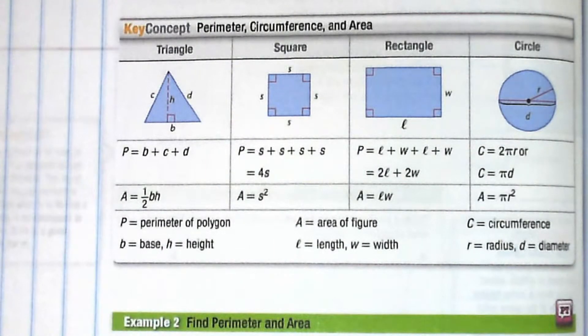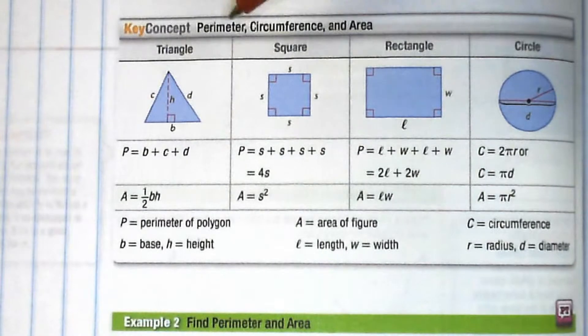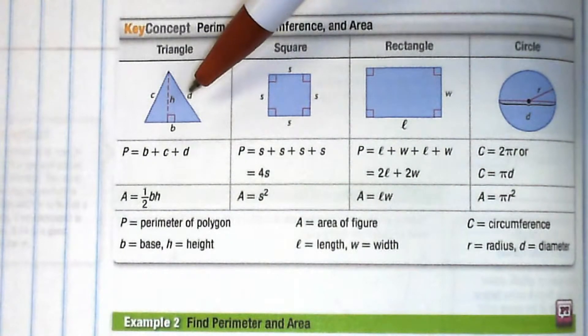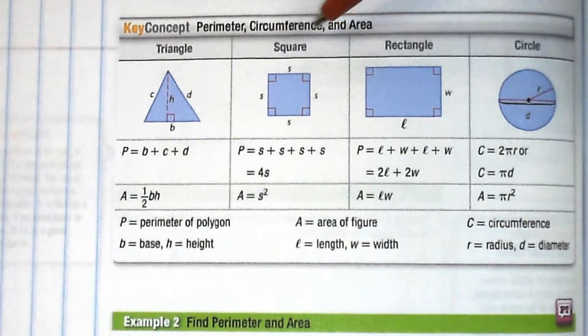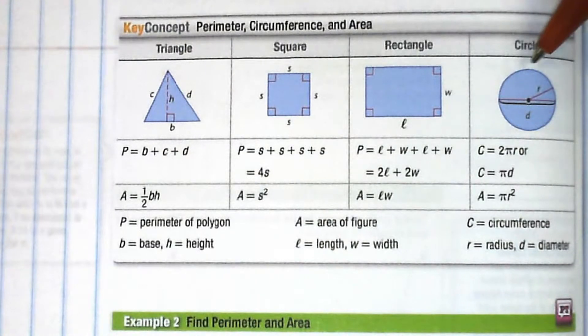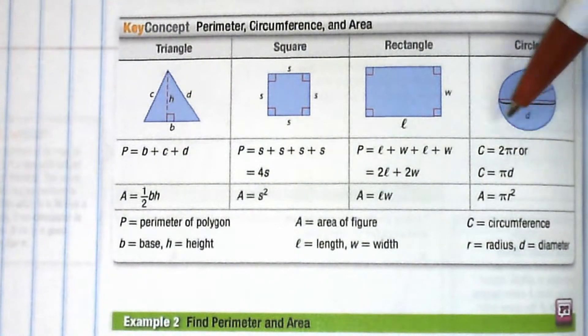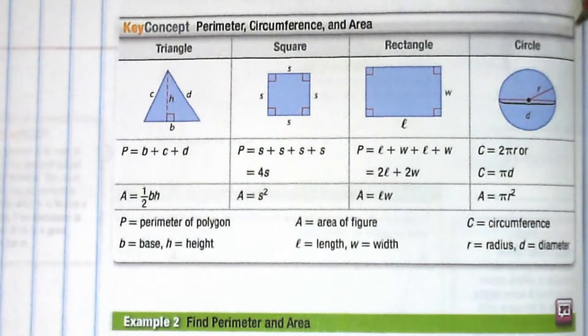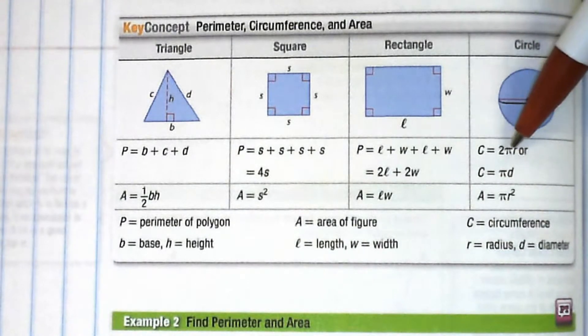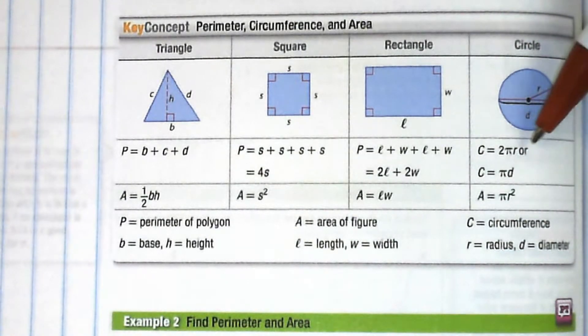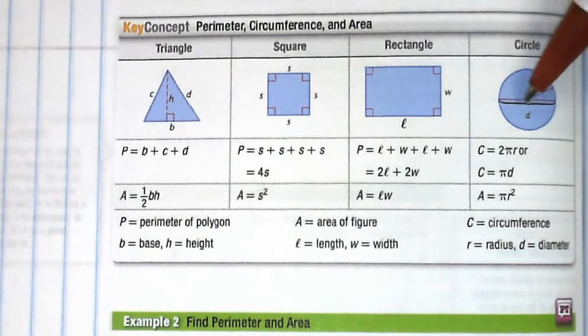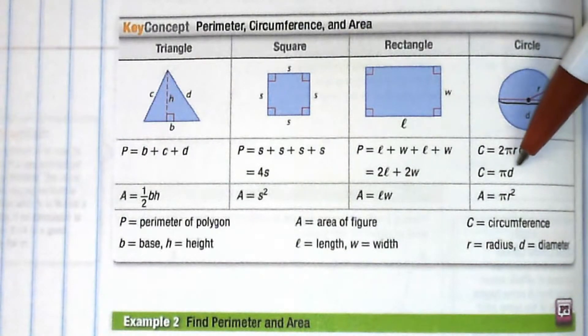At this point we also have to review perimeter, circumference, and area. This chart goes through first the perimeter: triangle, square, rectangle, and circle. Remember with the circle we refer to the distance around as circumference. For circumference: 2 times pi times radius, or remember twice the radius would be diameter, so you could also say pi d.